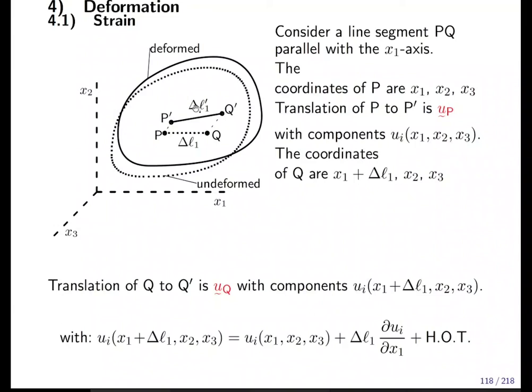The line element will change its length. Δl₁ prime is the new length and it will change its orientation. Now the translation of P to P prime and Q to Q prime is described by a vector which is a function of the position of the point where we start with.